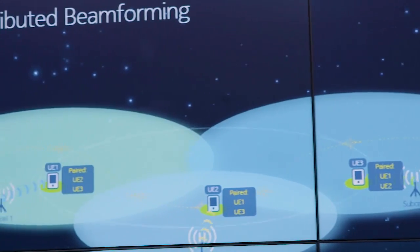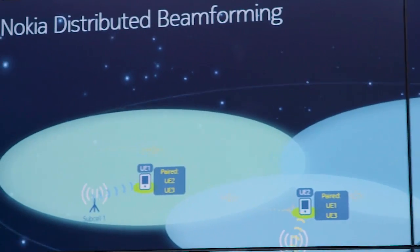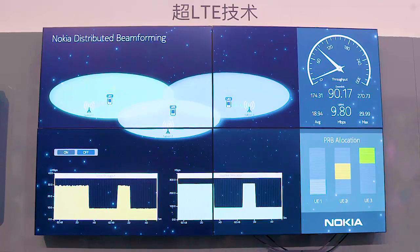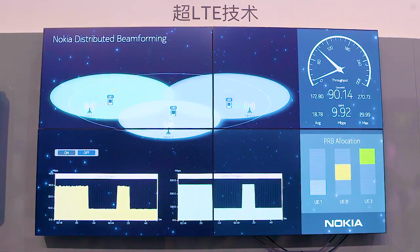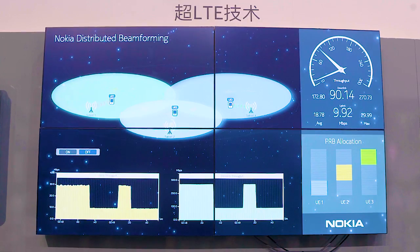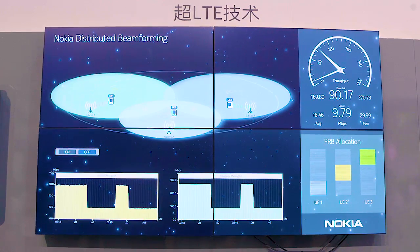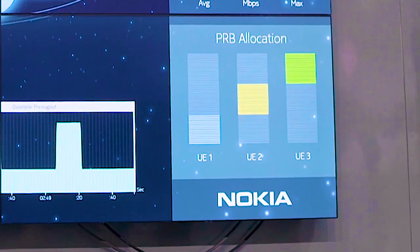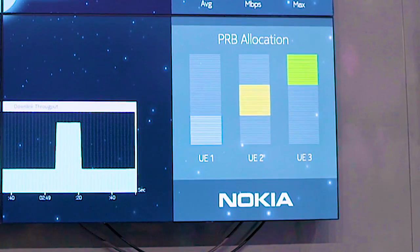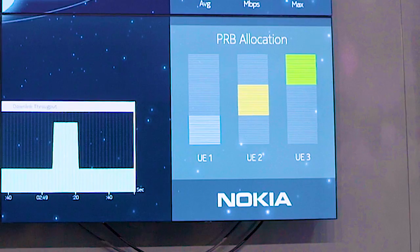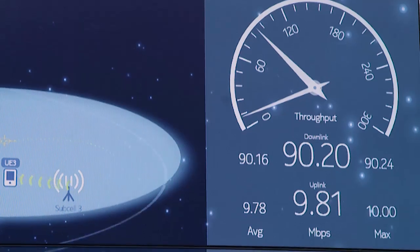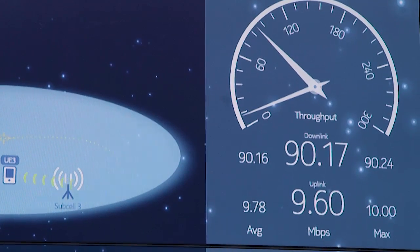Here, we have a Nokia Supercell with three subcells. There are three users in the Supercell. The total downlink and uplink throughput for the three users is shown here.